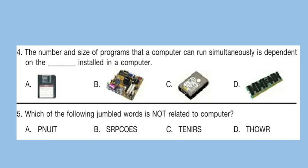Question 4: The number and size of programs that a computer can run simultaneously is dependent on the dash installed in a computer. Look at the options carefully and select your answer. The correct answer is option D.